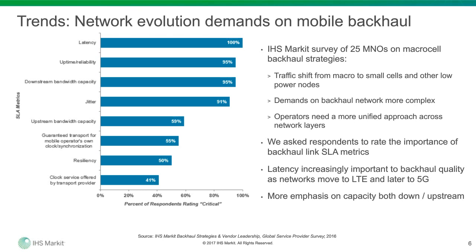Jitter is the next highest rated SLA metric at 91%, and is a key consideration particularly in the delivery of time-sensitive traffic — increasingly important for operators monetizing video and rich media services. Low latency and low jitter are critical in maintaining service and maintaining timing and synchronization, which is required for smooth handoff between small cells, macro cells, and all those other radio endpoints.